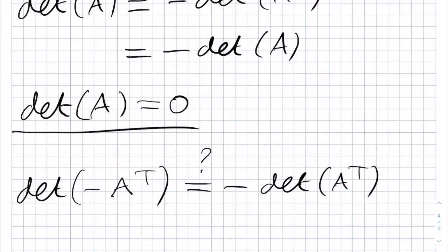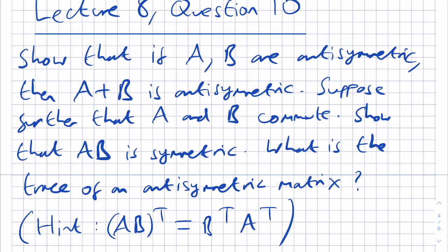Next, let's discuss question 10. The question says: show that if A and B are antisymmetric, then A plus B is also antisymmetric. Suppose further that A and B commute; show that AB is symmetric. Finally, it asks what is the trace of an antisymmetric matrix.